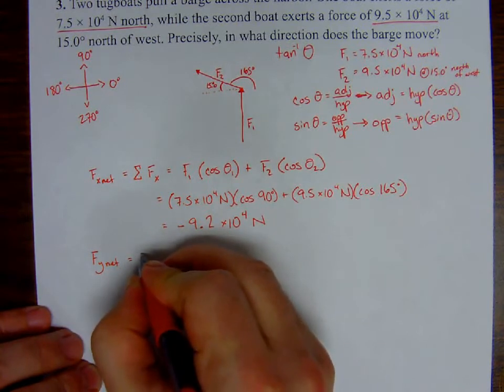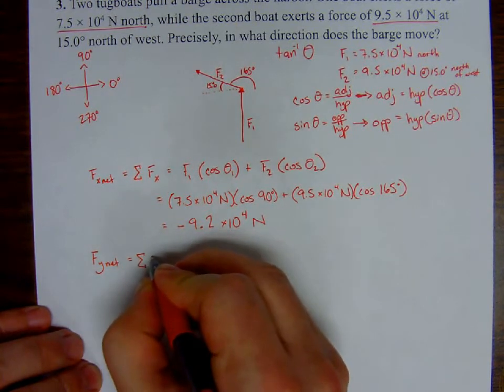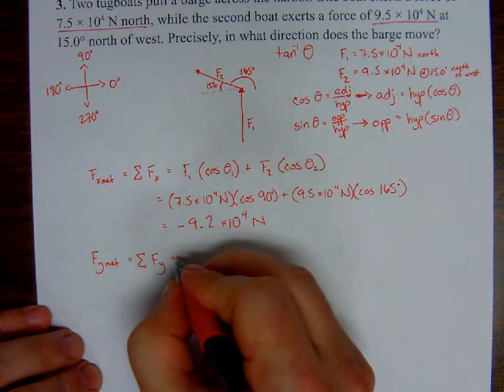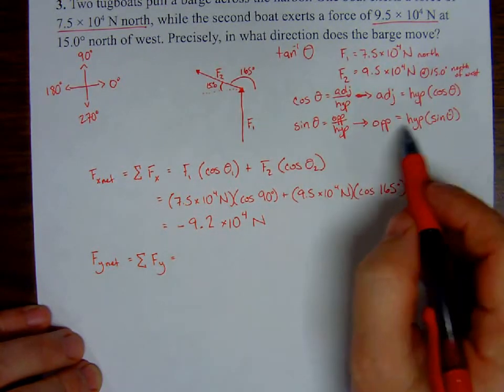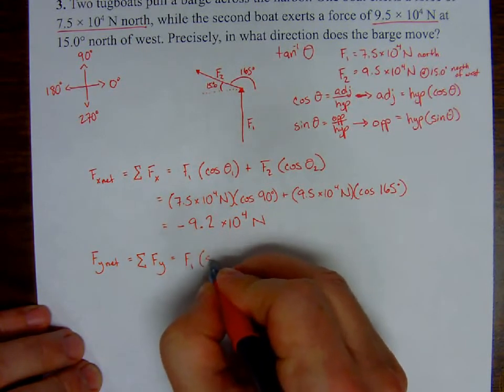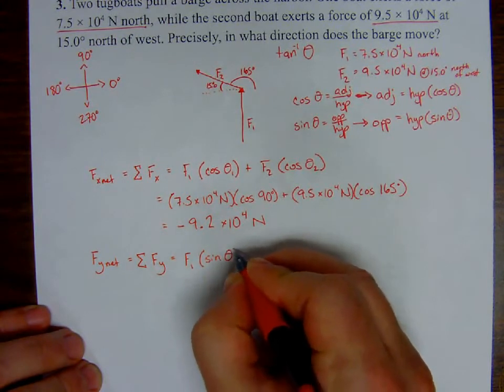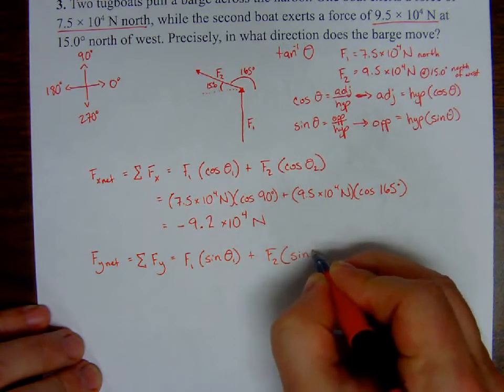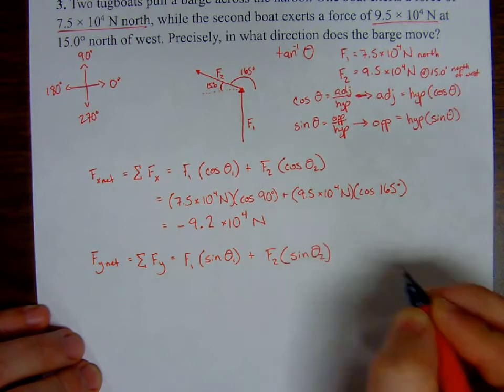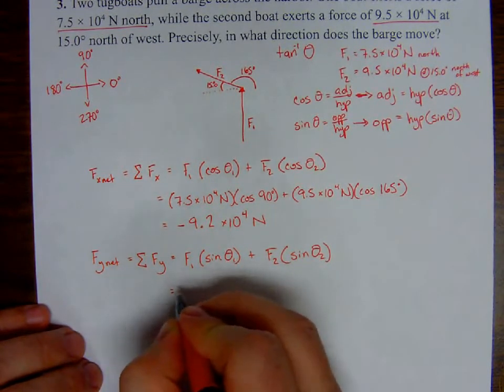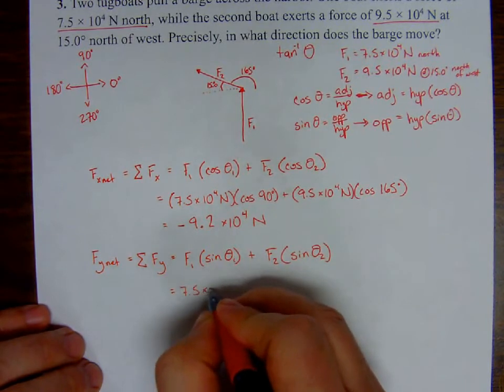Now let's plug in some values. Again, F1: 7.5 times 10 to the 4th Newtons, sine 90 degrees, plus F2: 9.5 times 10 to the 4th Newtons, sine of 165 degrees.